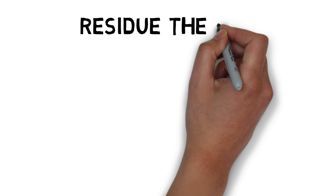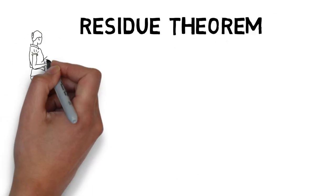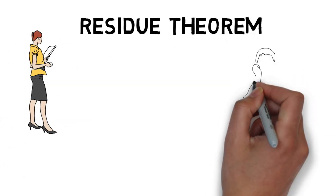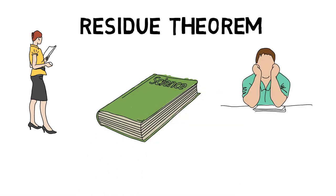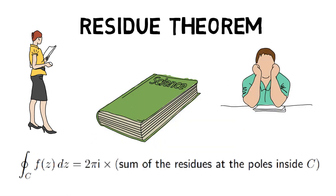Now, the Residue Theorem states that for a complex variable f in this region c, the closed integral of f over c is given by 2πi times the sum of the residues at the poles inside c.